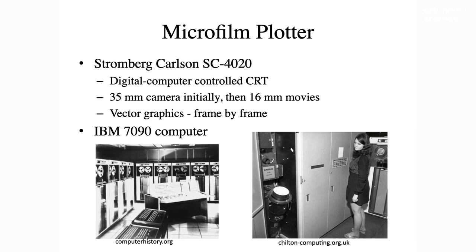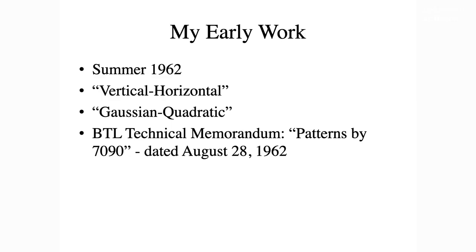Why didn't computer art happen more broadly in the 60s? Because back then, computers were mainframe computers that occupied almost a whole floor of a building with their own air conditioning. We had the IBM 7090 and 7094 computers. We also had significant graphic output — namely the microfilm plotter, the Stromberg-Carlson SC4020, which drew images on the face of a cathode ray tube while a 35-millimeter camera captured each one on a frame. My earliest work was accidental: a colleague had a computer program that went wild and made all sorts of crazy-looking images that looked an awful lot like abstract art. I thought, can I do it deliberately? I programmed it and wrote that up in a Bell Labs Technical Memorandum dated August 28, 1962.